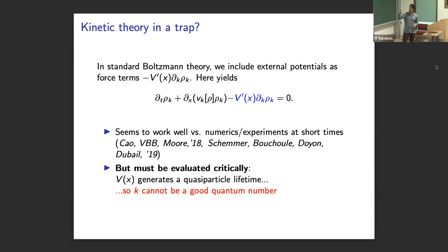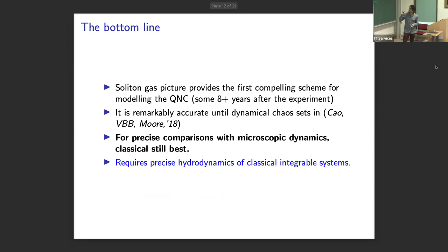And this does actually seem to work well. We benchmarked it numerically first against hard rods, and later Benjamin and collaborators show that it actually describes the experiment very well, up to the time for the experiment breaking down. But it's important to emphasize, even in our hard rod simulation, we saw chaos show up at a late enough time, and this equation stopped being valid at that time. And I want to emphasize, there's a fundamental reason to want to criticize this equation. It's that the potential which should generically generate a quasiparticle lifetime.